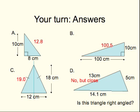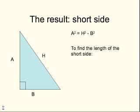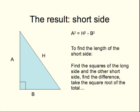So we're squaring the two short sides, adding, and taking the square root to get the length of the long side. You can, of course, turn the whole thing round. If you've got the hypotenuse and one of the short sides and want to find the other short side, the formula changes slightly. Suppose A is the short side we don't know and B is the short side we know: A squared equals the square of the hypotenuse minus the square of B. In words: find the squares of the long side and the other short side, find the difference between the squares, and take the square root of that difference. There's a mistake on my slide — that should say 'difference'.